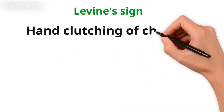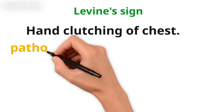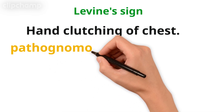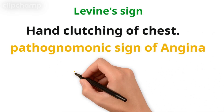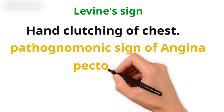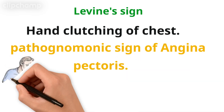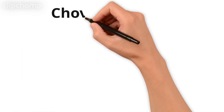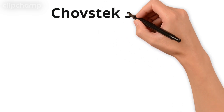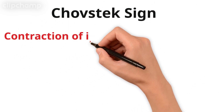Next is Levine's sign. It is the most important sign in cardiology. It is actually a hand clenching of the chest — when the patient comes in with hand clenching over the chest, it is the pathognomonic sign of angina pectoris, meaning chest pain. The patient presents like this.